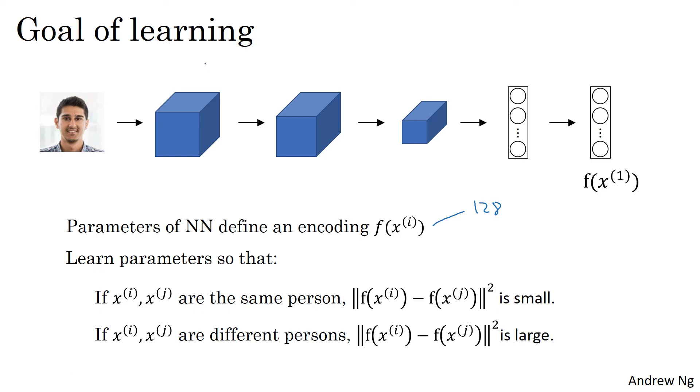So as you vary the parameters in all of these layers of the neural network, you end up with different encodings. And what you can do is use back propagation to vary all those parameters in order to make sure these conditions are satisfied.